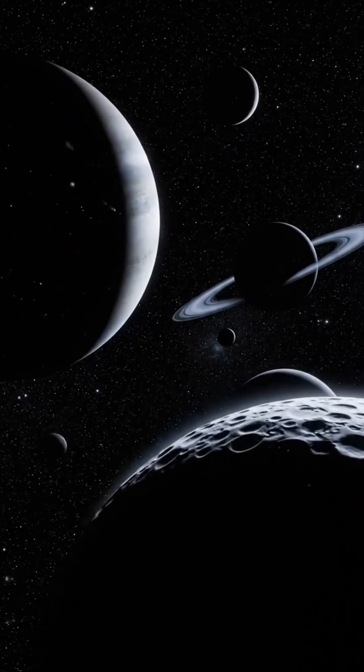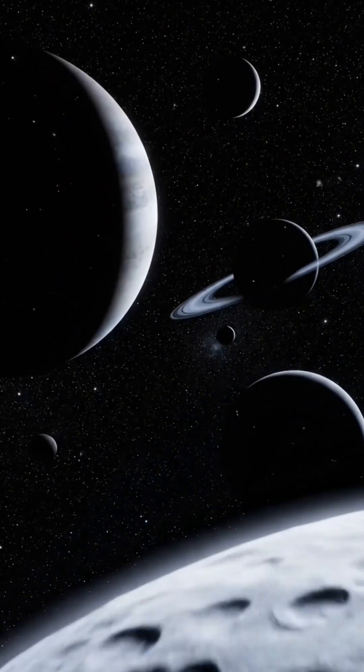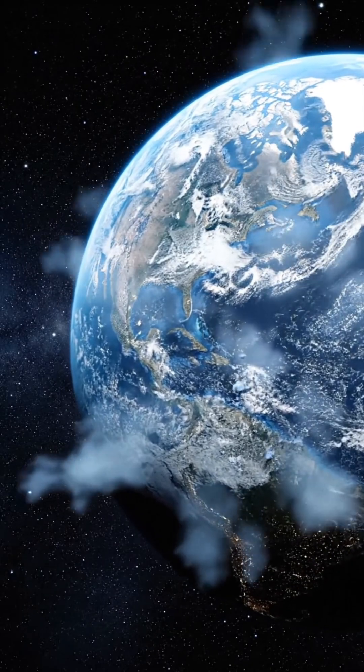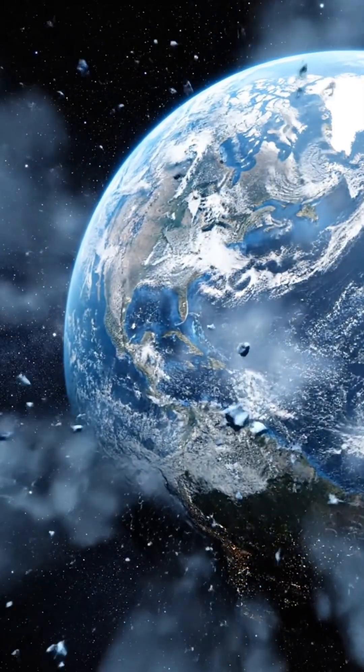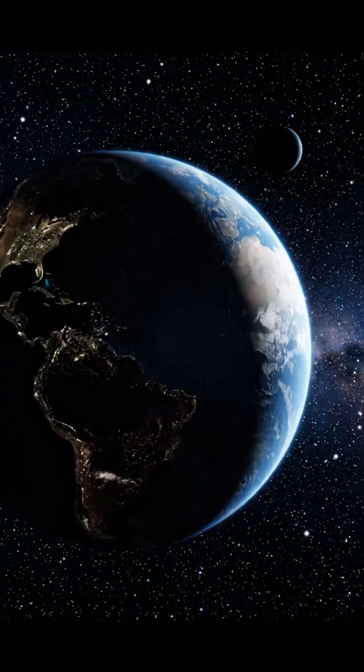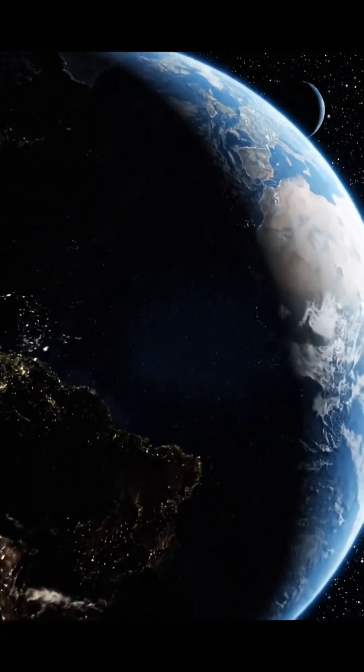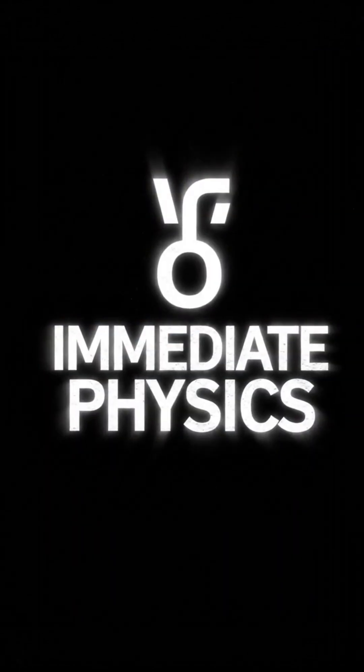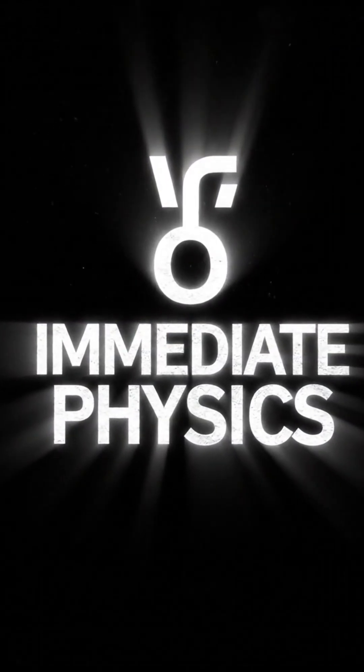The entire solar system would fall into eternal darkness. Simultaneously, Earth would lose its anchor. No longer held by the Sun's gravity, our blue planet would instantly begin to drift aimlessly through the vast, cold void of the Universe. This is the immediate physics of disappearance.